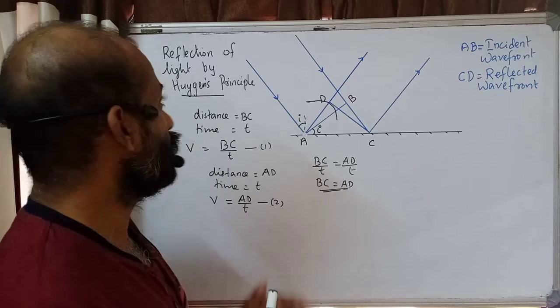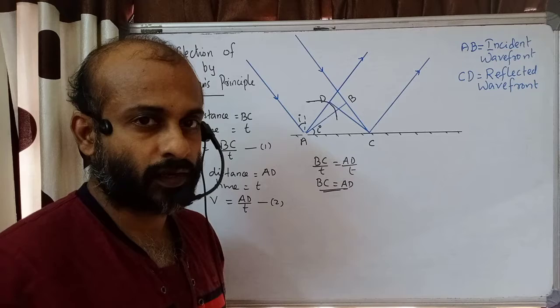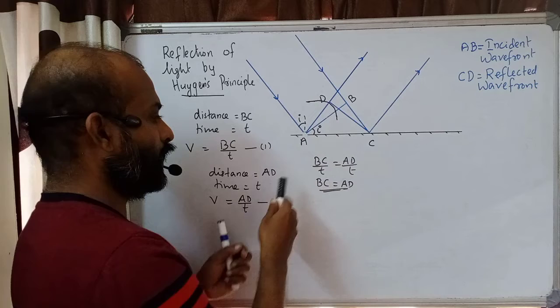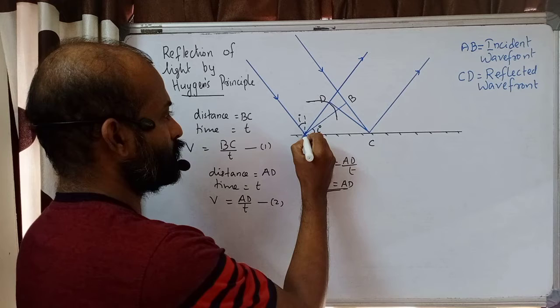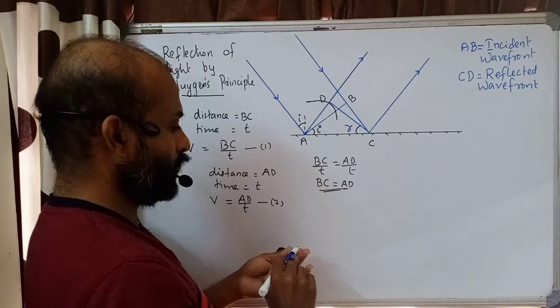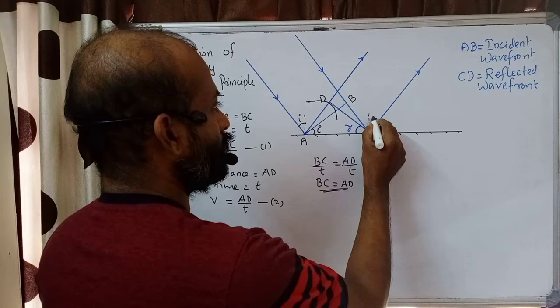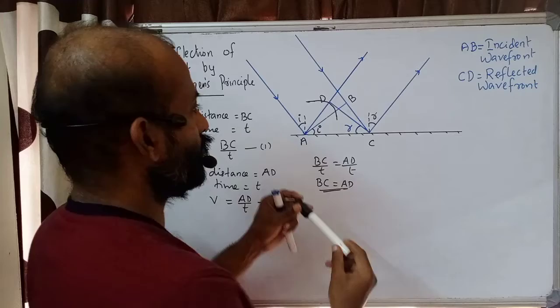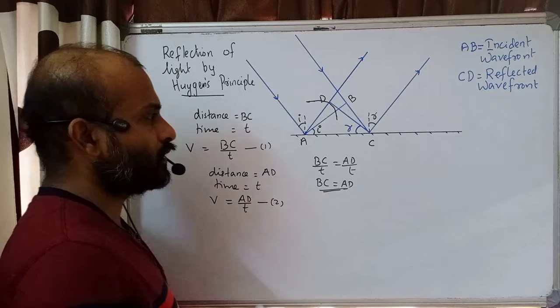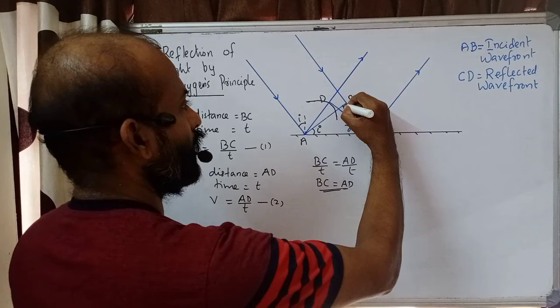We have the incident wavefront and the reflected wavefront from Huygens principle. Now we need to prove the law of reflection: angle of incidence equals angle of reflection. The incident wavefront AB makes an angle I with the mirror surface. The reflected wavefront CD makes an angle R with the mirror surface. This gives us two right-angled triangles, since we have 90-degree angles here.